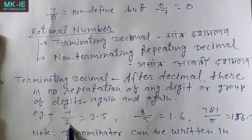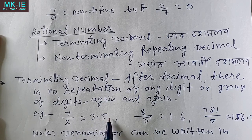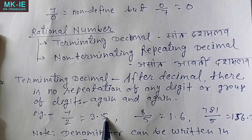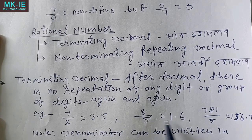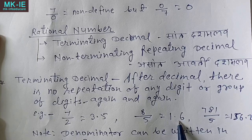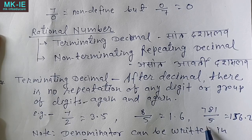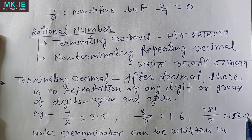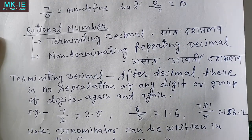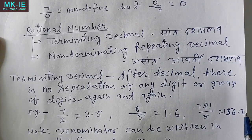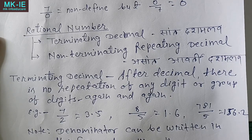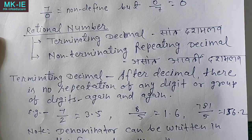For example, 7 by 2 converts to 3.5 — after this it terminates and does not repeat. Similarly, 8 by 5 is also a terminating decimal. When we convert it, we get 1.6, which terminates. Another example: 781/5 gives 156.2 — after the decimal, no digit or group of digits repeats, so it will be a terminating decimal.